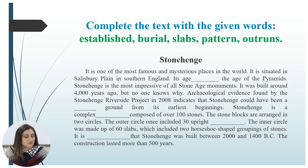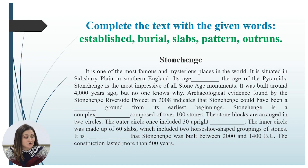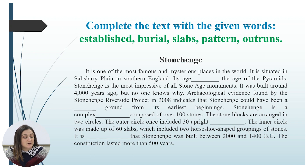The stone blocks are arranged in two circles. The outer circle once included 30 upright slabs. The inner circle was made up of 60 slabs, which included two horseshoe-shaped groupings of stones. It is established that Stonehenge was built between 2000 and 1400 before Christ. The construction lasted more than 500 years.